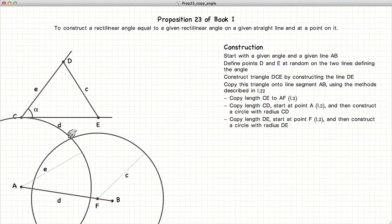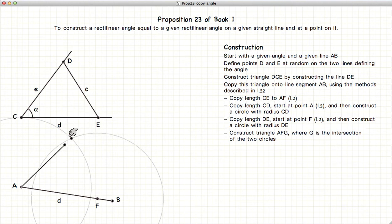Label the intersection of the two circles as G and construct a triangle AGF.